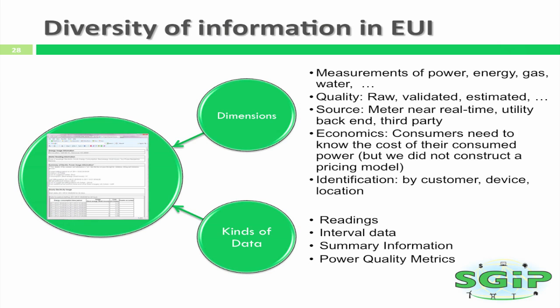The data is organized so that there are readings, interval data, and summary information. All of that data is described by the dimensions of the data — the ability to say that the data was raw data straight from a meter, or validated data that goes through the utility backend systems and is established as accurate, or from a modeling point of view, estimated data. All of these different types of data attributes can be described within the energy usage model. In addition, the source of the data could come from the meters in near real time, the utility backend, or from a third party.